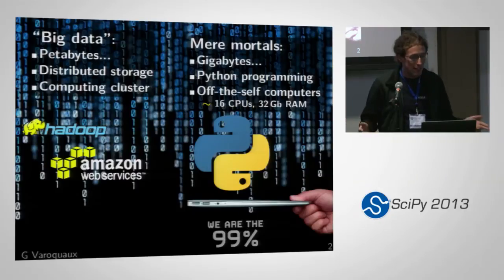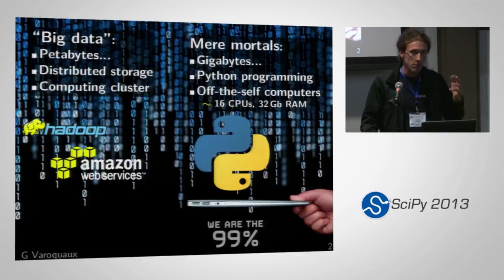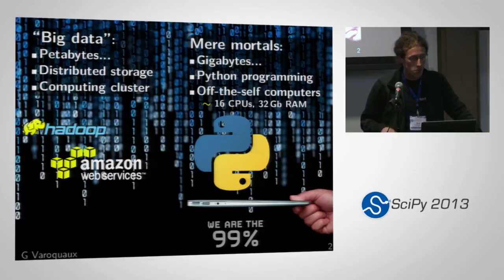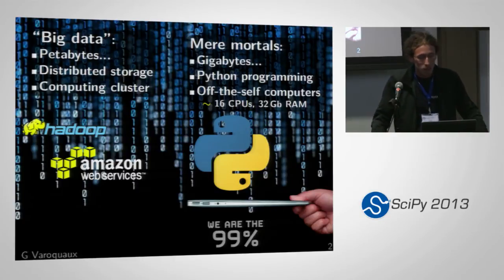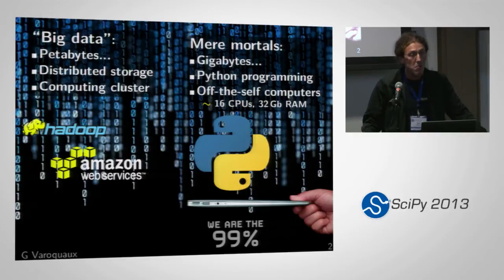We all hear about big data. I used to think it was about terabytes, but it's about petabytes — distributed storage, clusters, grids, clouds, technology like Hadoop and Amazon Web Services, which I would love to use. But I am just part of the 99%. I have gigabytes of data, leaning towards a terabyte, but still a lot of gigabytes. I like Python. I don't like Java. I don't really enjoy Hadoop, and I mostly work on off-the-shelf computers.